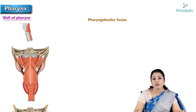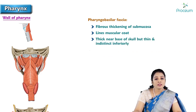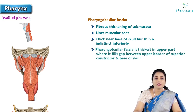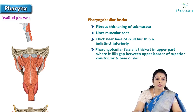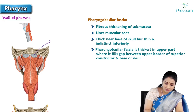The next layer is the pharyngeal basilar fascia. It is a fibrous thickening of the submucosa lining the muscular coat; it is thick near the base of the skull but thin and indistinct inferiorly. Pharyngeal basilar fascia is thickest in the upper part, where it fills the gap between the upper border of the superior constrictor and the base of the skull.